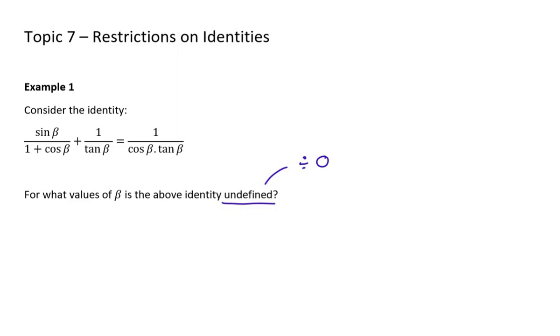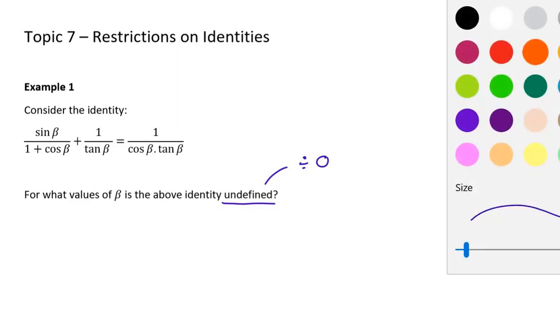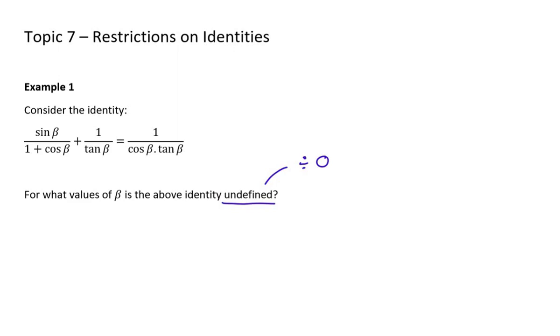It's if you're dividing by zero. So basically we need to look at all our denominators. Now the unfortunate thing is that often you do a lot of work to get the same answers because the denominators are often interlinked. So first things first, let's look at our first denominator. So basically this will be undefined when 1 plus cos beta equals 0. So that's the first thing we're going to have to look at. The second thing we're going to have to look at is there's a tan beta.